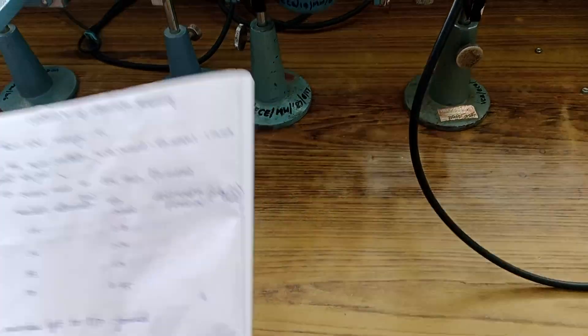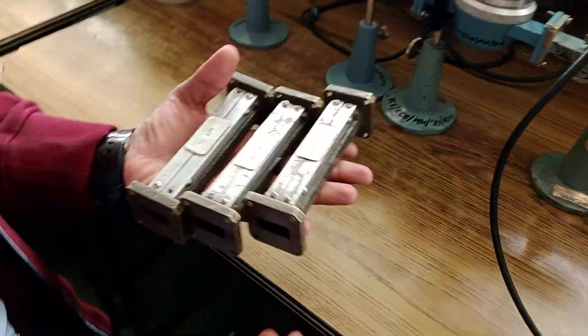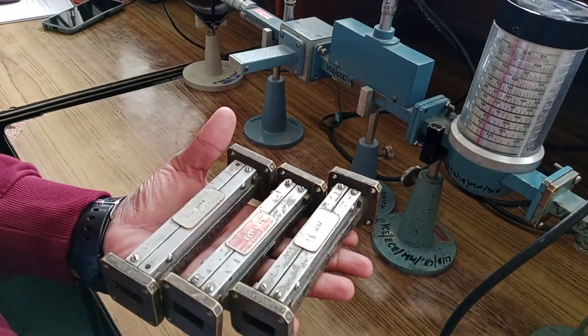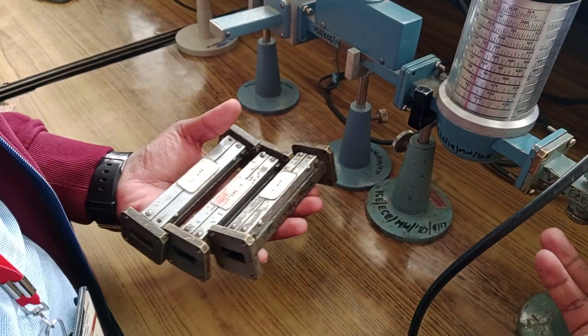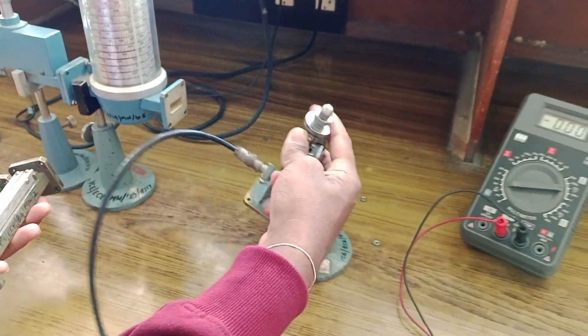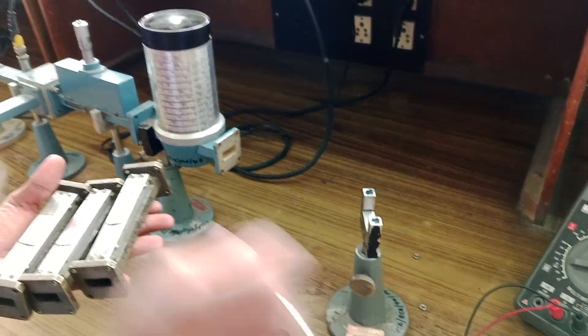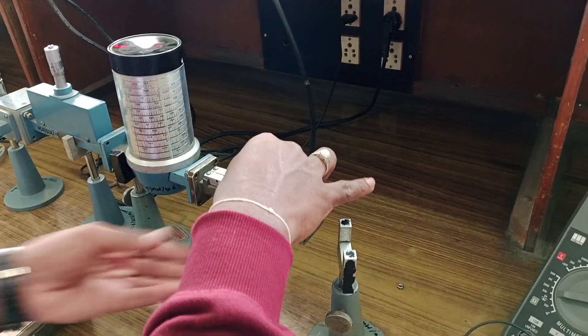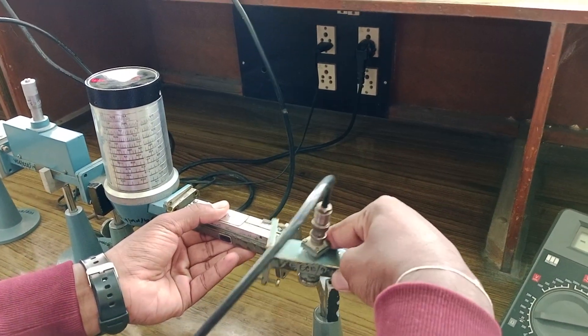Once you are done with this variable attenuator, we have three fixed attenuators. For these fixed attenuators, you have to remove the probing section, attach the fixed attenuator, and replace the probing section.